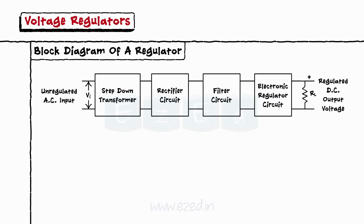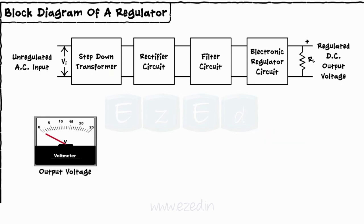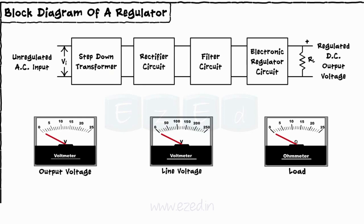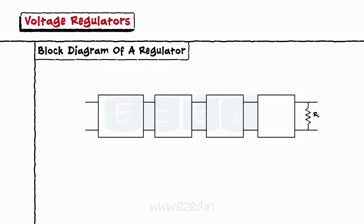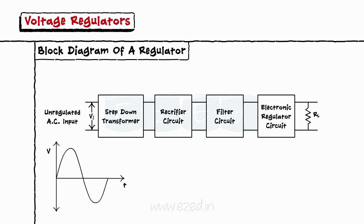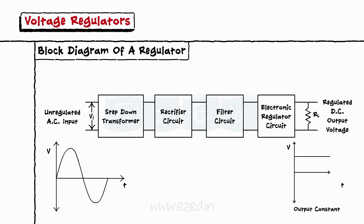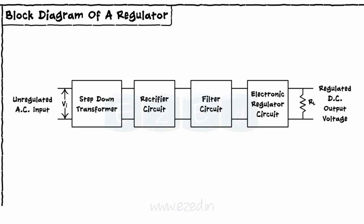Let's move on to the block diagram of the voltage regulator. The term voltage regulator is used when the output delivered is DC voltage. A voltage regulator is a circuit which supplies constant voltage at the output in spite of change in the input line voltage or change in the load. The block diagram shows AC signal or line voltage as the input, and we get the DC signal at the output. The different blocks are transformer, rectifier, filter, and lastly, the electronic regulator circuit. Let's see the function of each block one by one.